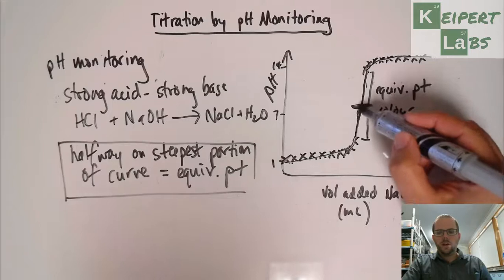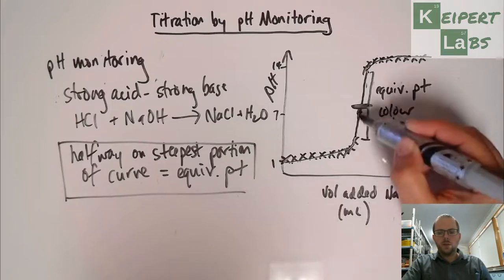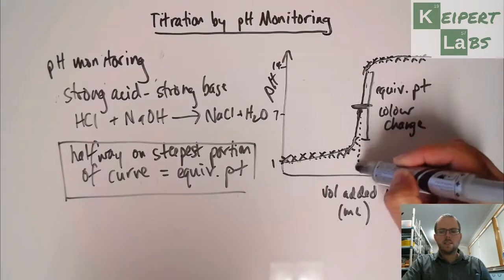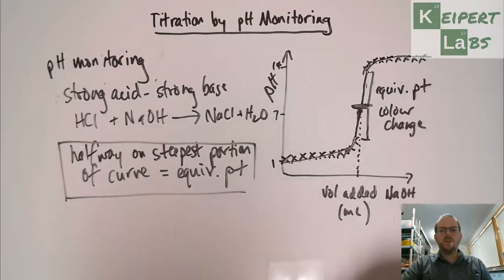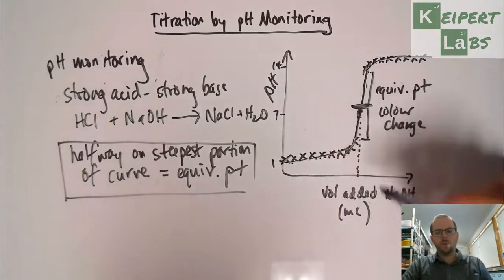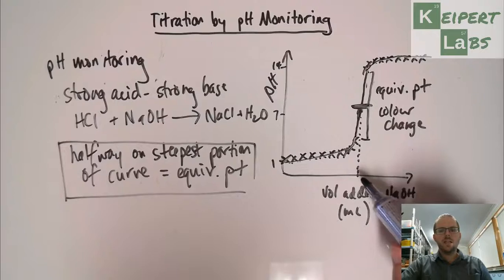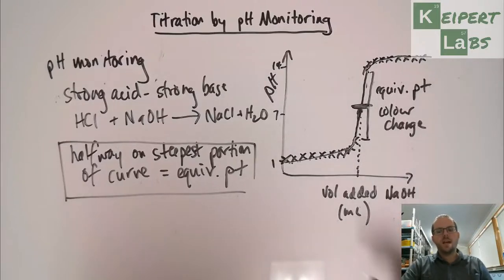And so when we look at this steep portion of the curve, we look at the point halfway along. So halfway up that steepest part of the curve is the equivalence point. We identify the volume that we added, we trace it down to the x-axis and we read it from there. The more accurately we collect our data, the more accurately we can determine this volume that was added to get to the equivalence point, and then we can continue our calculation from there.